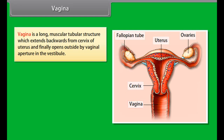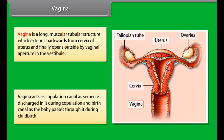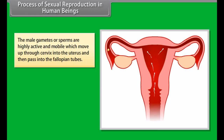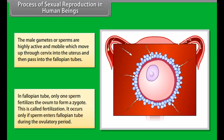The ovary forms ova by oogenesis in the germ cells and secretes estrogens and progesterone. Fallopian tubes are one pair of elongated, ciliated, muscular, and tubular structures extending from just close to the ovaries to the uterus. The outer part of each fallopian tube lying close to the ovary has a wide aperture called the ostium and a number of finger-like processes called fimbriae to receive the ovum released from the ovary.